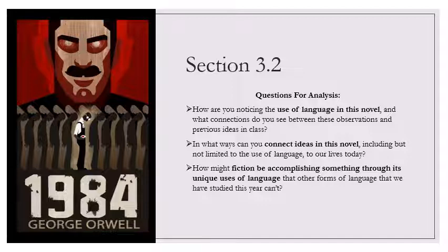O'Brien smiled faintly. You are no metaphysician, Winston, he said. Until this moment, you had never considered what is meant by existence. I will put it more precisely. Does the past exist concretely in space? Is there somewhere or an or other a place or a world of solid objects where the past is still happening? No. Then where does the past exist, if at all? In records. It is written down. In records. And in the mind. In human memories. In memory. Very well, then. We, the party, control all records and we control all memories. Then we control, then we control the past, do we not?